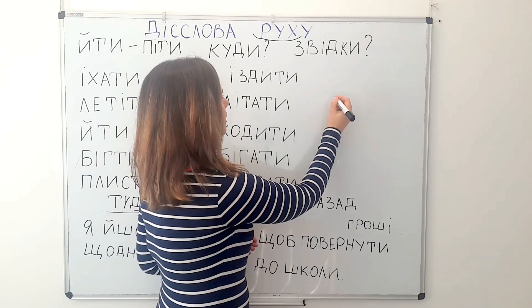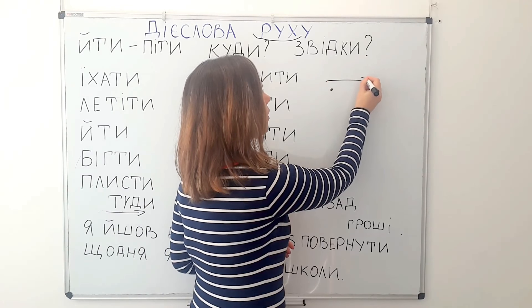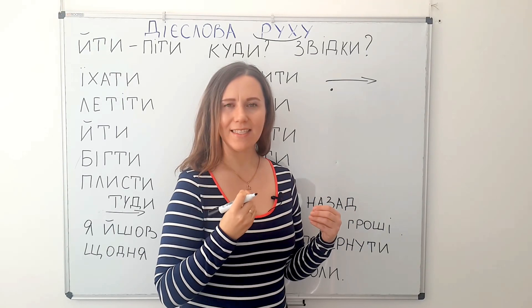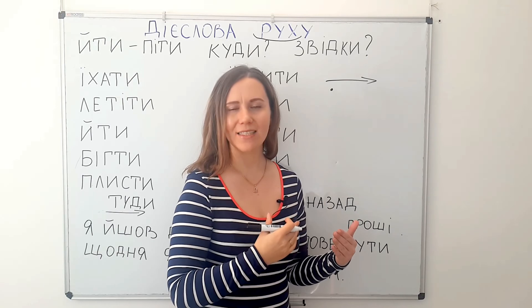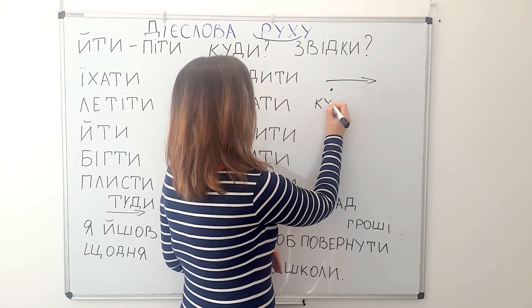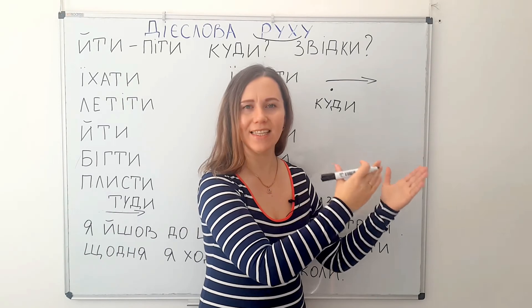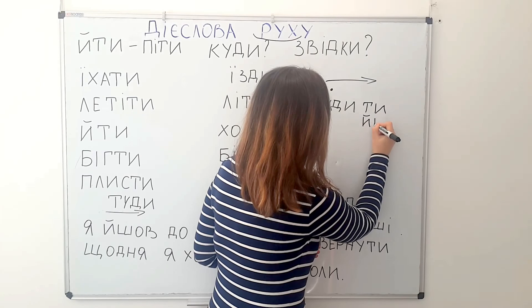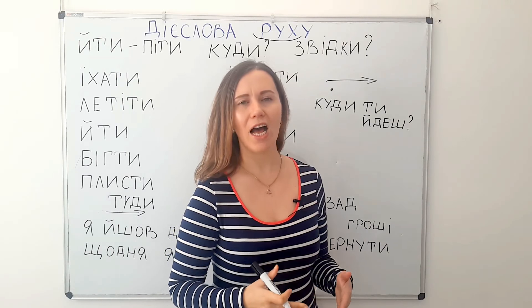For example, if we are standing here and we see that our friend is going somewhere, and we want to know where they are going in Ukrainian, we ask with the help of the question word КУДИ. КУДИ means 'where to?' So we ask: Куди ти йдеш? — Where are you going to?